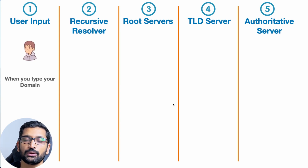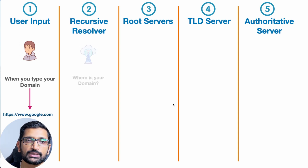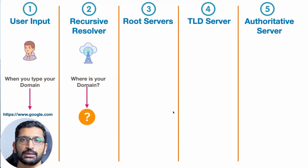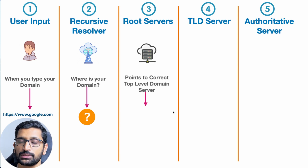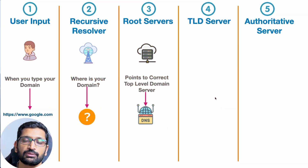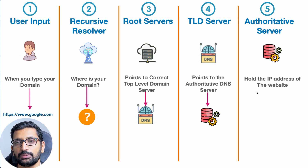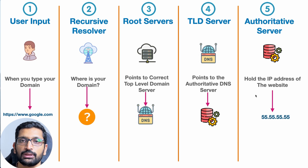In step one, user Bob inputs the URL in the browser. In step two, the recursive resolver comes into play — that's where your internet service provider, or ISP, tries to find the domain name. In step three, the root server finds the top level domain server which contains the actual DNS entries. In step four, the TLD server points to the authoritative server. And in step five, the authoritative server responds back with the actual IP address of your website.